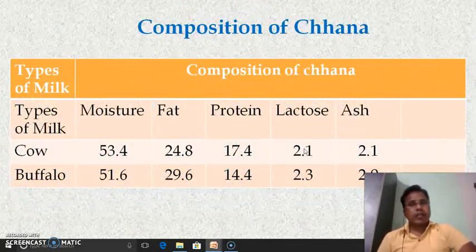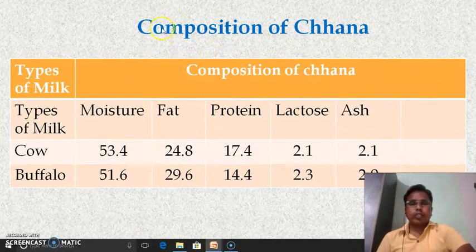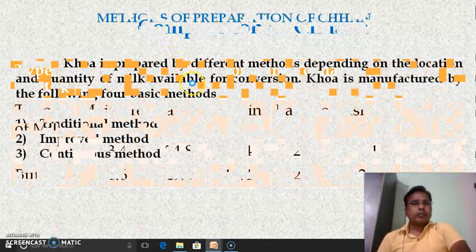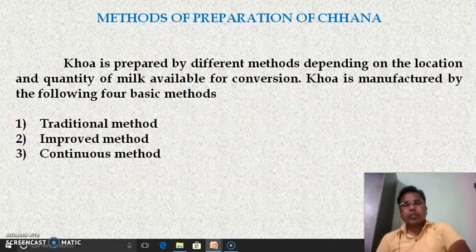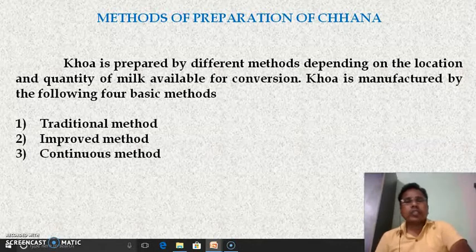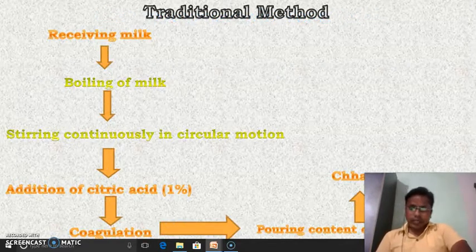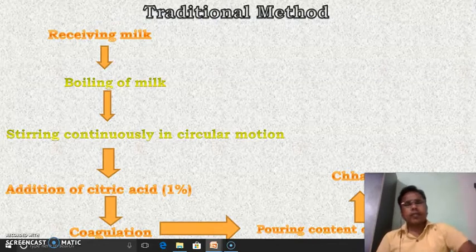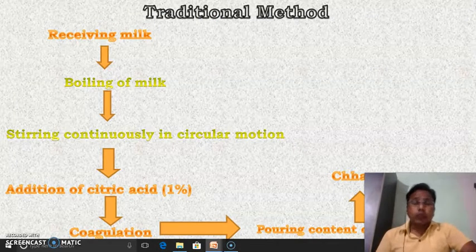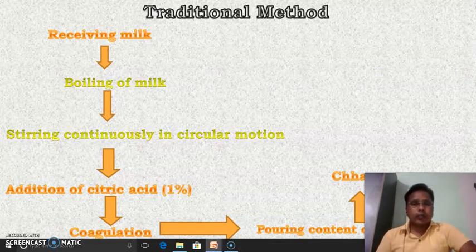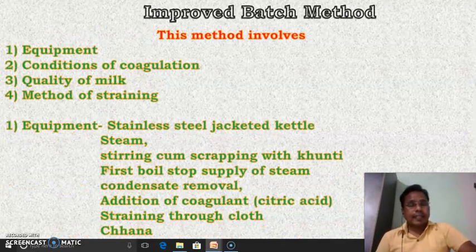We have also seen the composition of channa, and we have seen there are three different methods by which channa may be prepared. Number one is the traditional method, the second one is the improved method, and the third one is the continuous method. We have already seen in detail how channa is prepared by the traditional method. Now, the second method — that is the improved method.